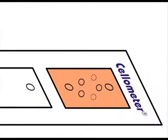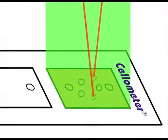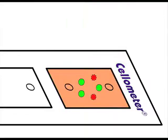Cellometer automatically performs cell image acquisition and imaging analysis. Typical assay time is less than 60 seconds.